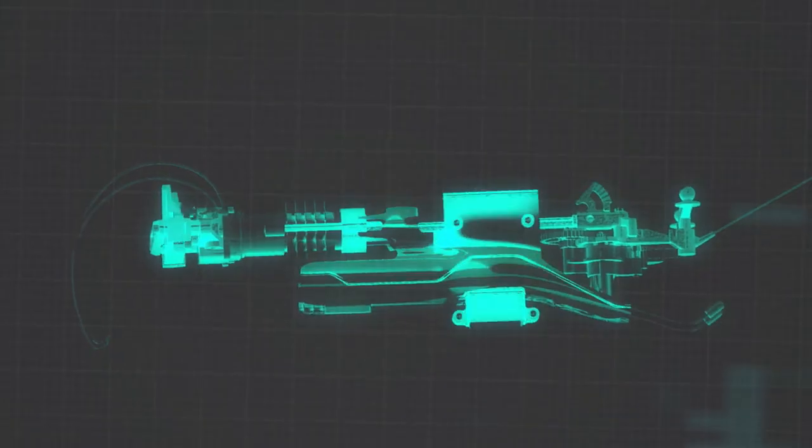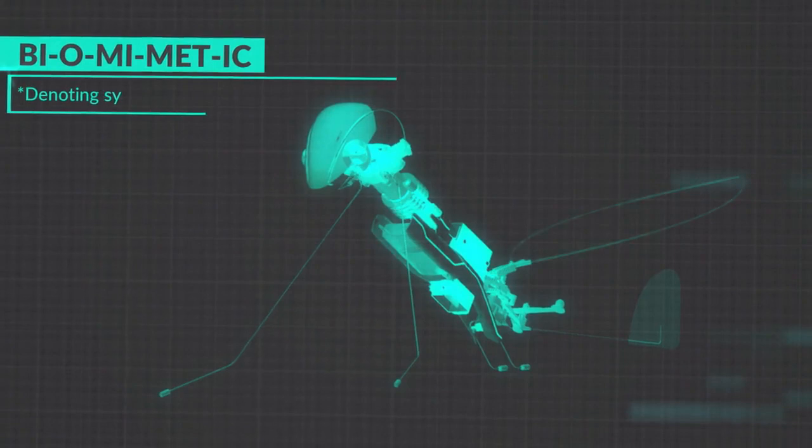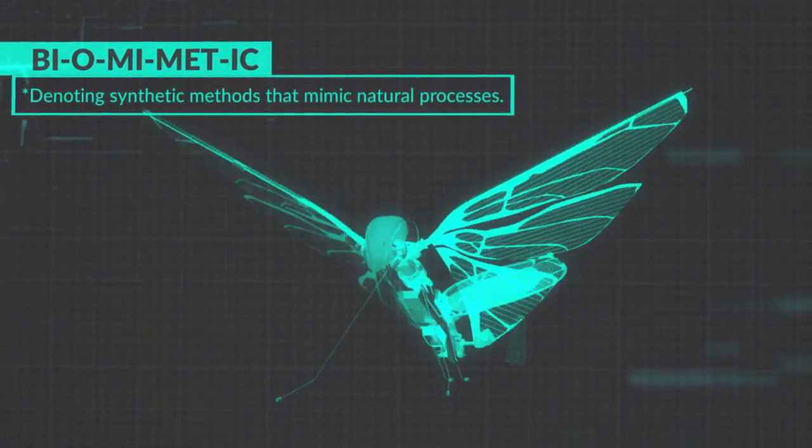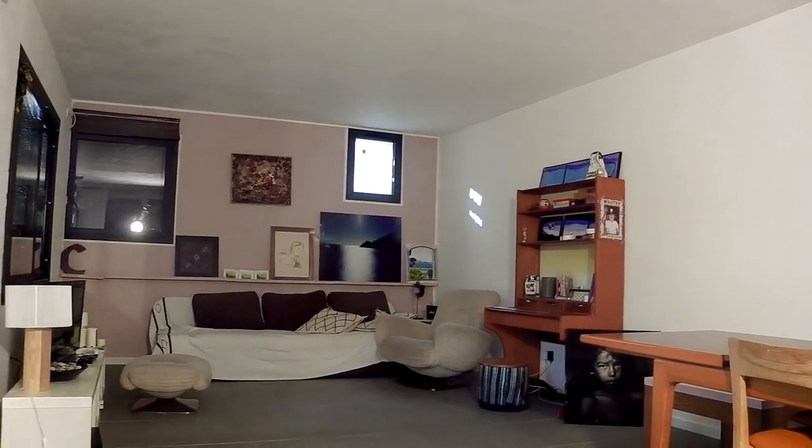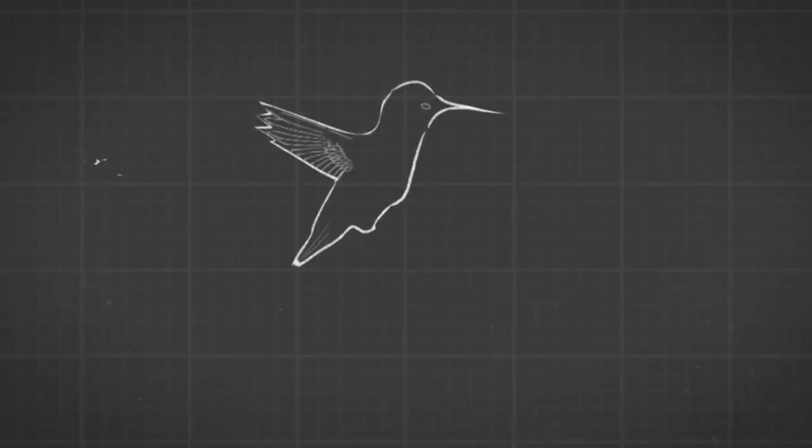Metafly flies using a unique method called biomimetics, denoting synthetic methods that mimic natural processes. You know how a bird flies into your house and can navigate around everything without hitting anything? Metafly can do that.